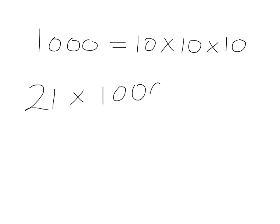And for a thousand, a thousand is just 10 times 10 times 10. So if we take 21 and we multiply it by a thousand, we've got to put on a 0 for the first 10, a 0 for the next 10, and a 0 for the next 10. In other words, three zeros here, three zeros here.